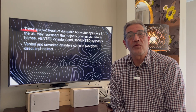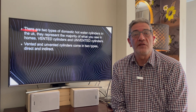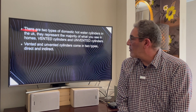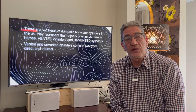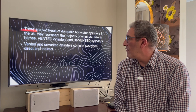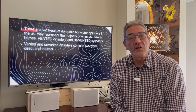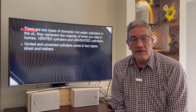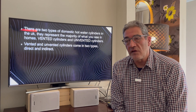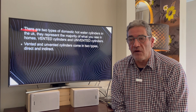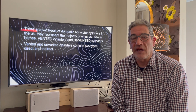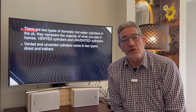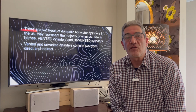There are two types of domestic hot water cylinders in the UK, and they represent the majority of what you see in flats and homes: vented cylinders and unvented cylinders. Both also have two sub-types — direct or indirect — as we shall see in the slides.